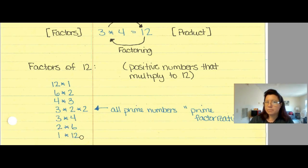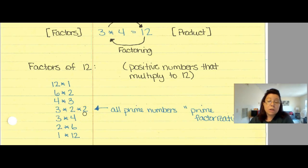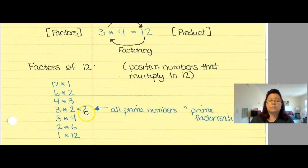I skipped over 1 because it's very special. The prime factorization of 12 is 3 times 2 times 2 — and yes, I know I can say times 1 times 1, but I'm not going to worry about that. All of those values — 3, 2, and 2 — are prime numbers. This is 12's prime factorization.